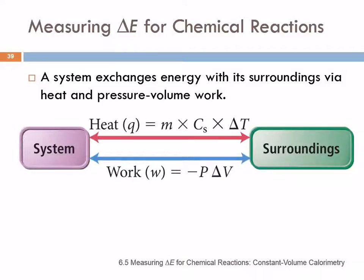We've talked about heat, symbolized as Q. Heat can be quantified as the mass times the specific heat capacity times the change in temperature. Heat can flow from the system to the surroundings or from the surroundings to the system. Work, pressure-volume work, is negative the pressure times the change in volume. Work can be done on the system or on the surroundings, and energy can transfer back and forth in that way.